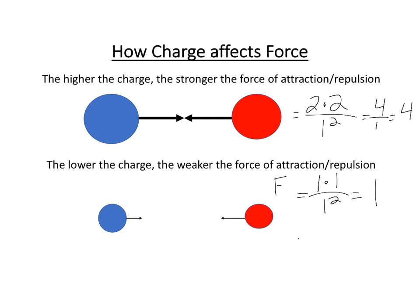And also, if we decreased it, so say 0.5 times 0.5 over 1 squared, so now we have 0.25 over 1, which is also known as 1 fourth. So if we decrease the point charges, then it decreases. The bigger the point charge, the larger the force of attraction. The smaller the point charge, the weaker the force of attraction.